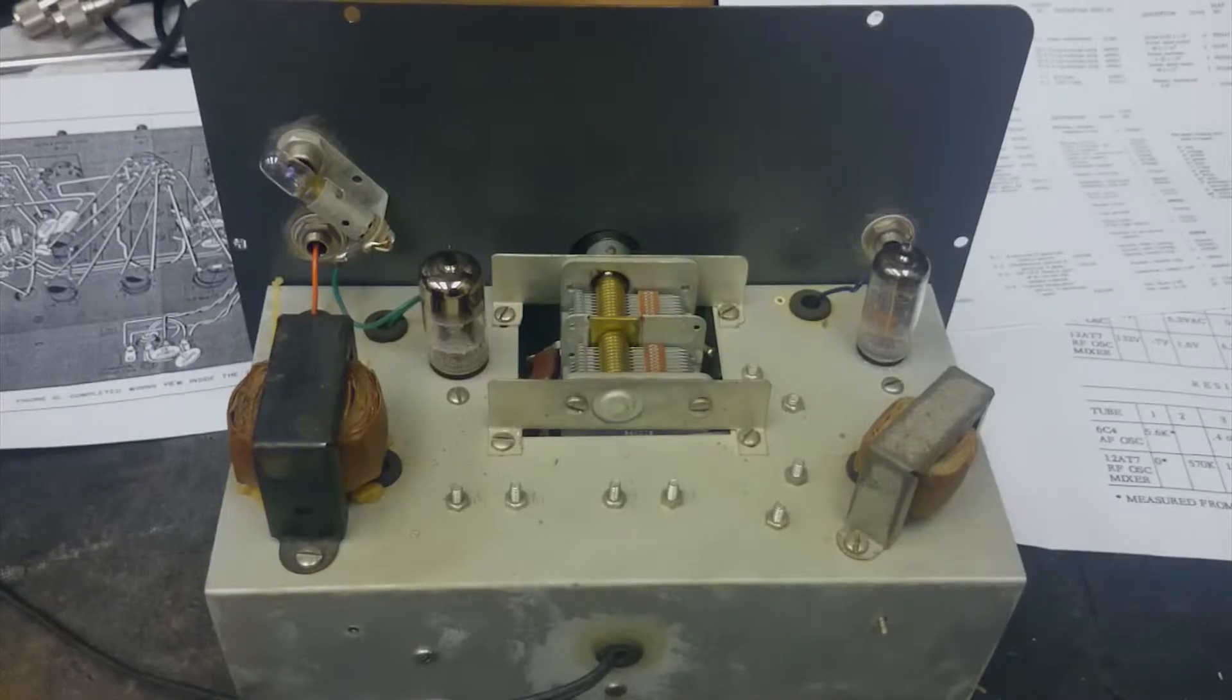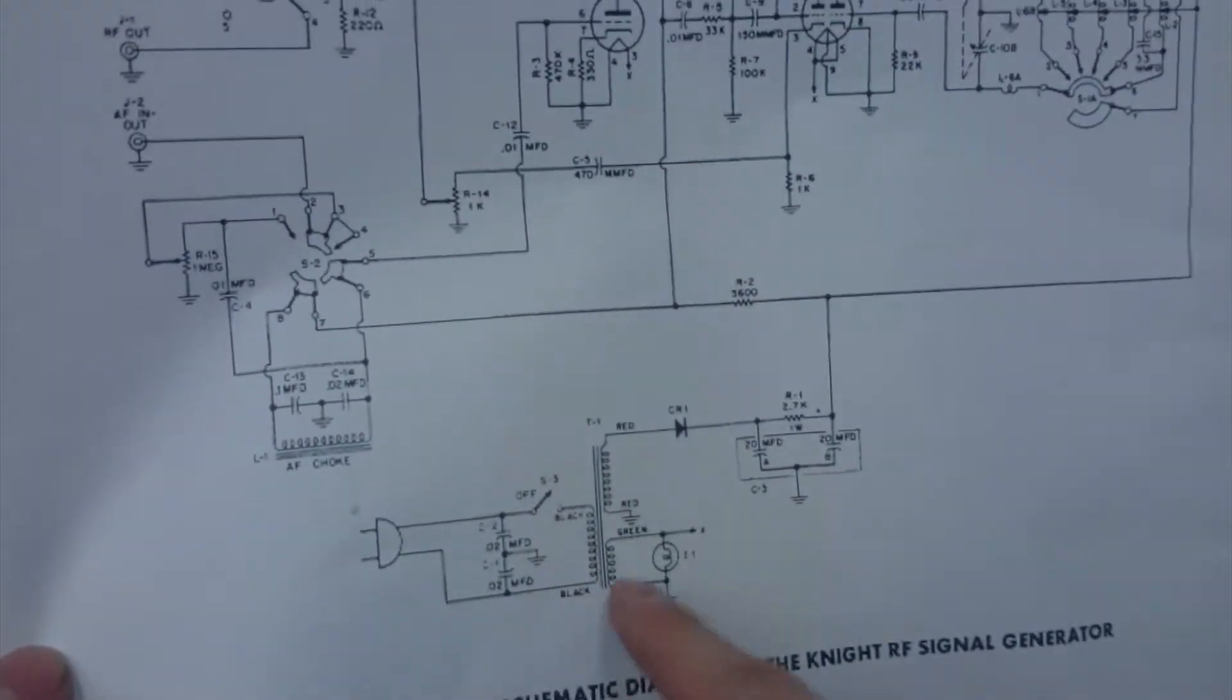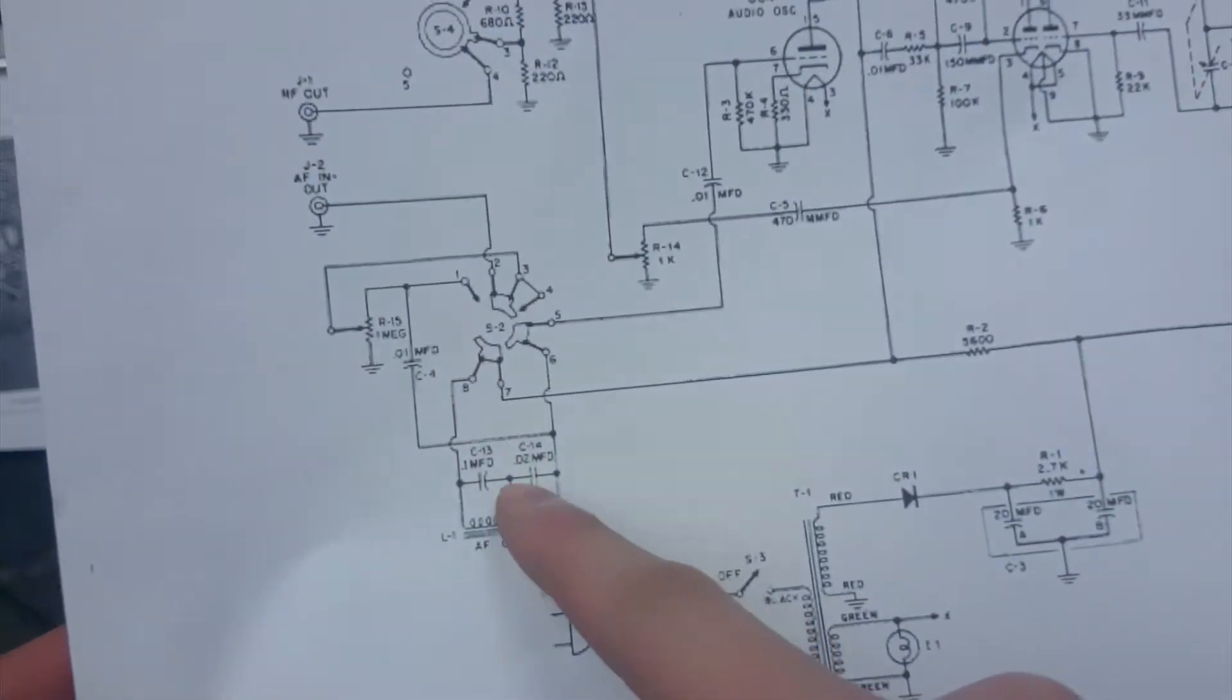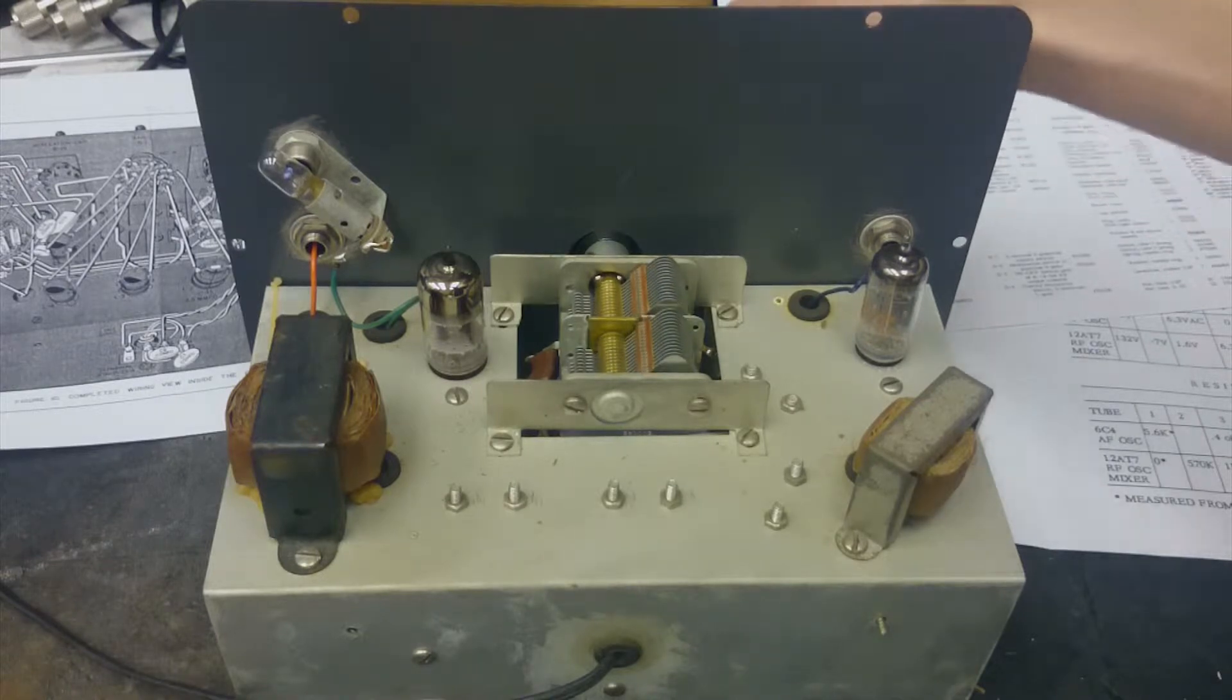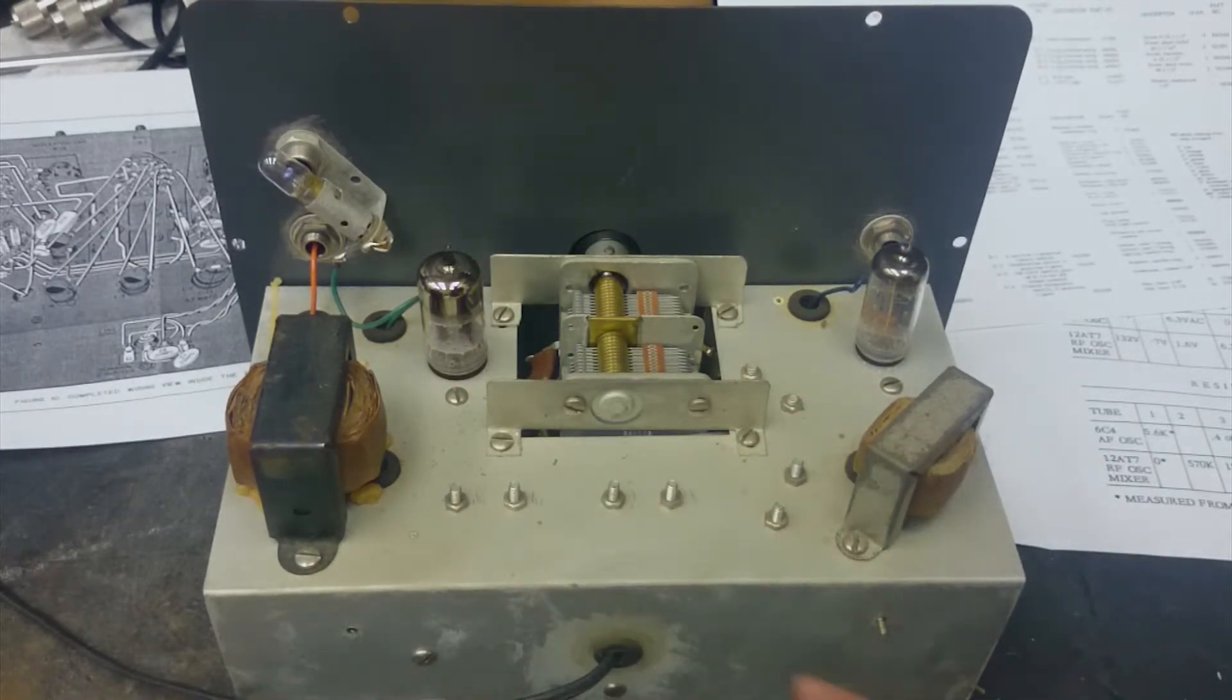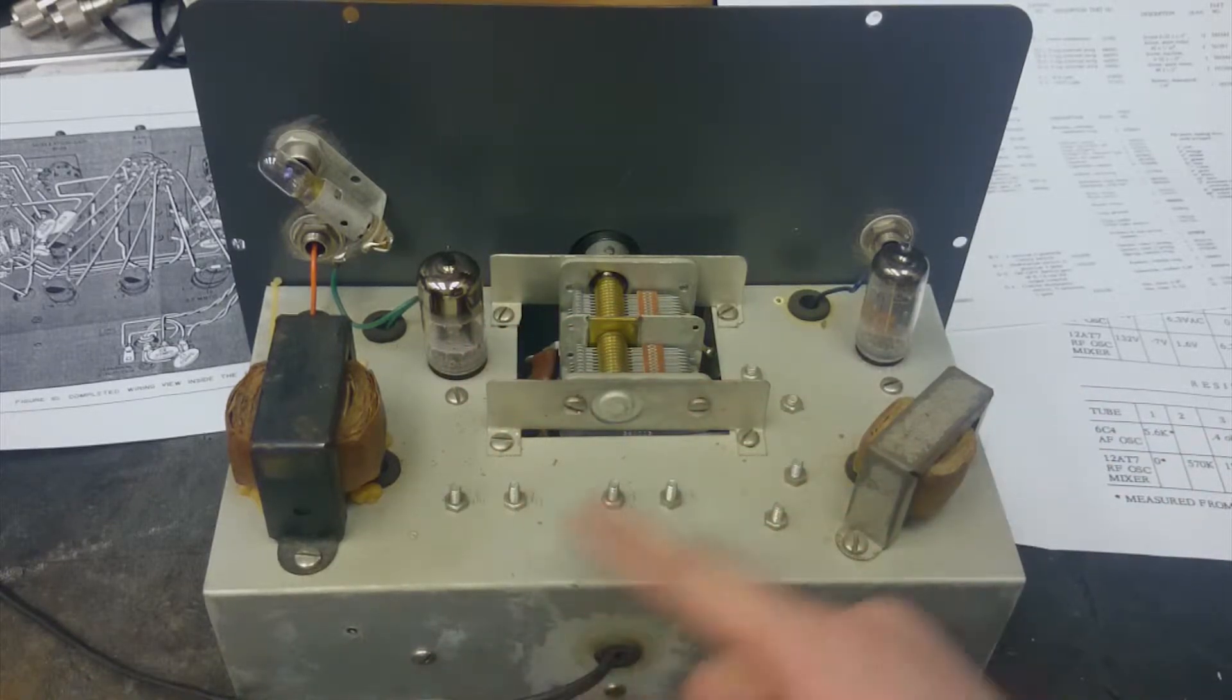Looking at the back, we've got two transformers, our variable condenser, and two tubes, and also the pilot light over there. On the schematic, the first transformer does the input for the tube power supply and the second one goes to the AF oscillator. The variable condenser can be tweaked via the knob in the front. Overall, the top of this is pretty clean.